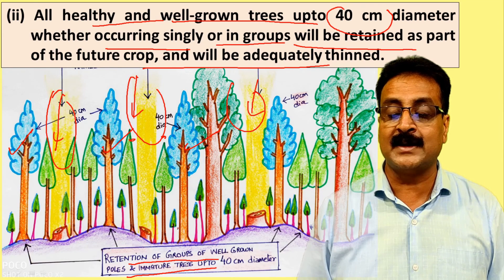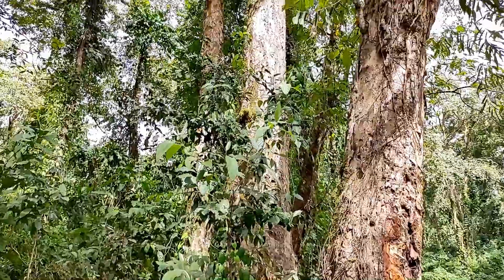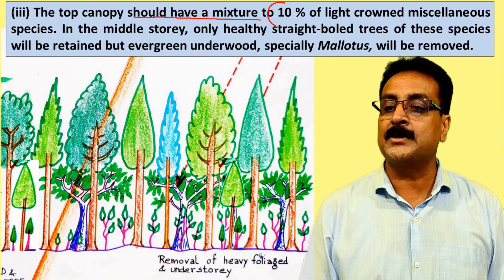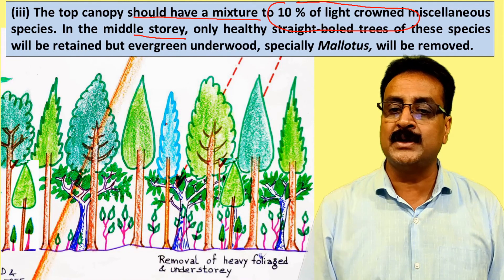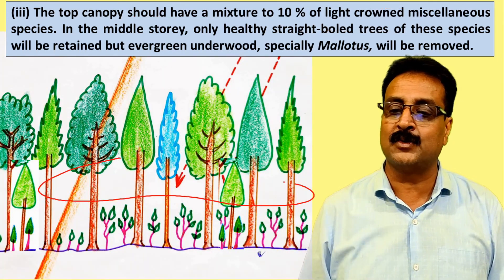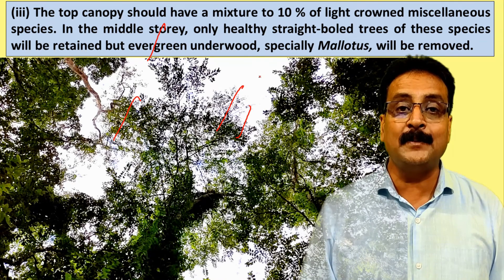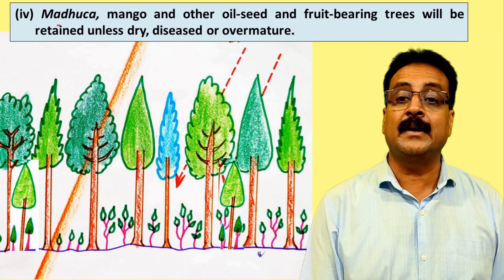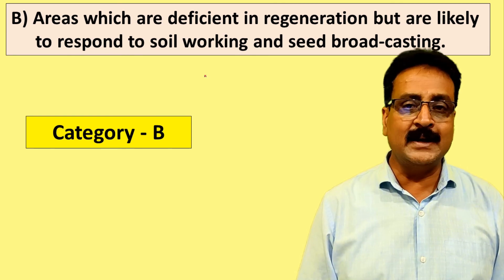We retain trees up to 40 centimeter diameter and fell dead, dying, malformed, or mature trees. The top canopy should have a mixture with 10% light crown species to allow some light in, and miscellaneous species of no use will be cut down. In the middle story, heavy branches are removed, and understory is removed to admit light from the top, which helps photosynthesis and lets the pole or sapling stage grow. Mahua, mango, and other oil seed and fruit trees are not cut down as they are useful.